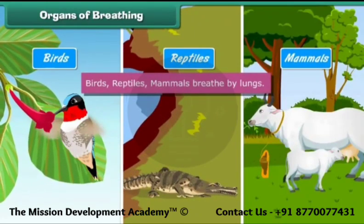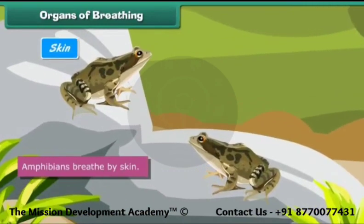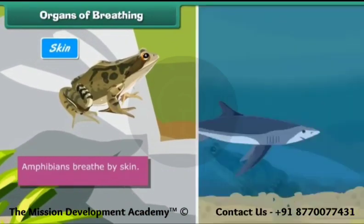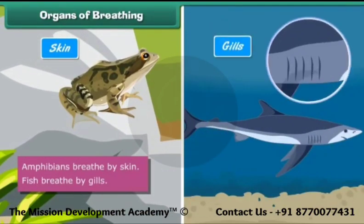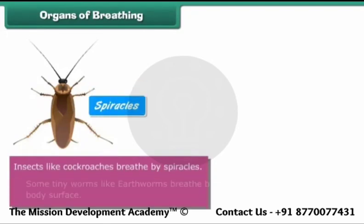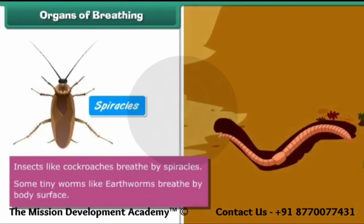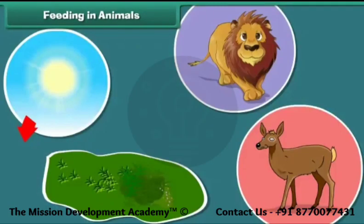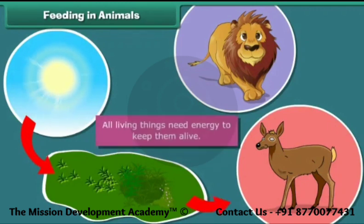Birds, reptiles, and mammals breathe by lungs. Amphibians breathe by skin. Fish breathe by gills. Insects like cockroaches breathe by spiracles. Some tiny worms like earthworms breathe by their body surface.